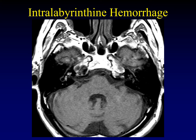Be careful of intralabyrinthine hemorrhage. When you have trauma to the cochlea and vestibule, that may not be enough trauma to cause an actual fracture of the otic capsule, but just enough to jar the membranous labyrinth — you can get hemorrhage into the labyrinth itself. At first glance, you might mistake this for enhancement because it looks just like labyrinthitis. But if you look carefully, this is a non-enhanced scan, so that's intrinsic T1 signal — intralabyrinthine hemorrhage, usually a result of trauma.